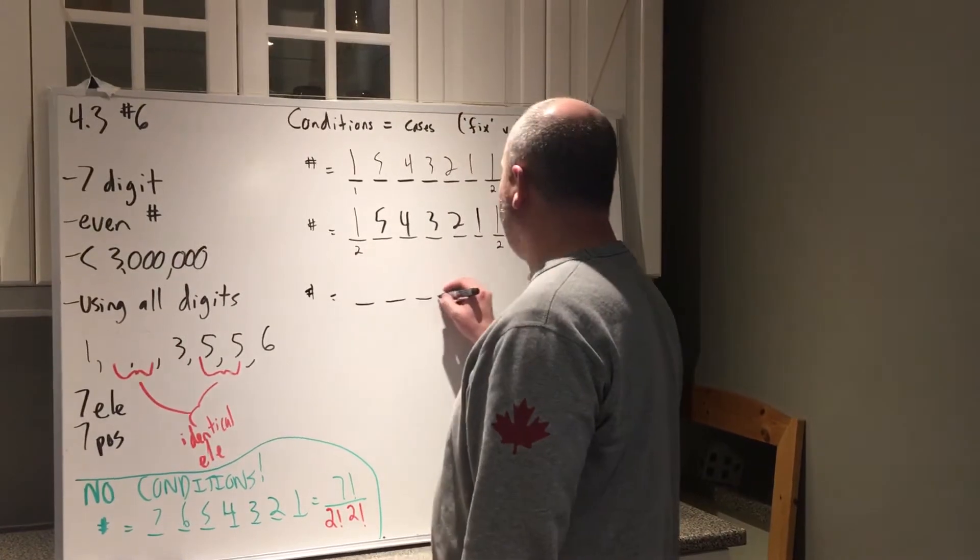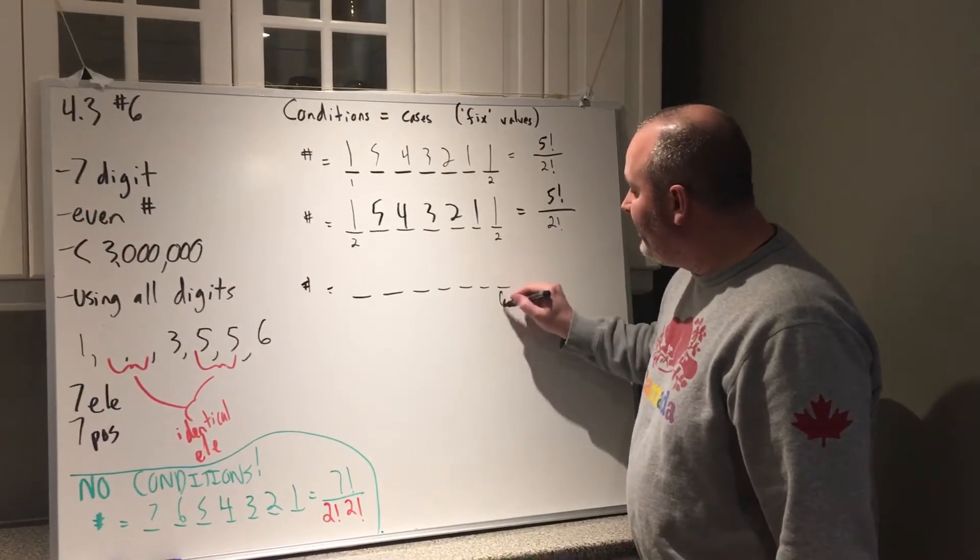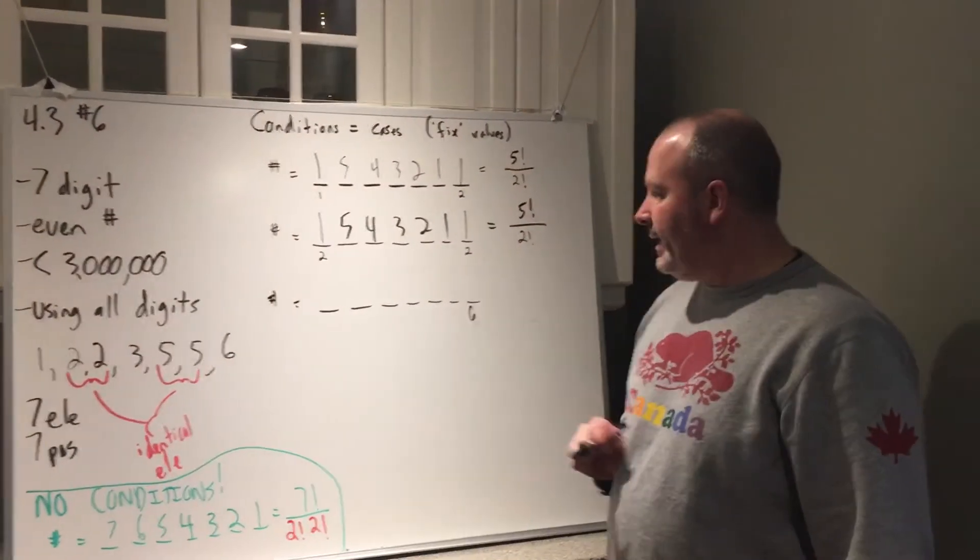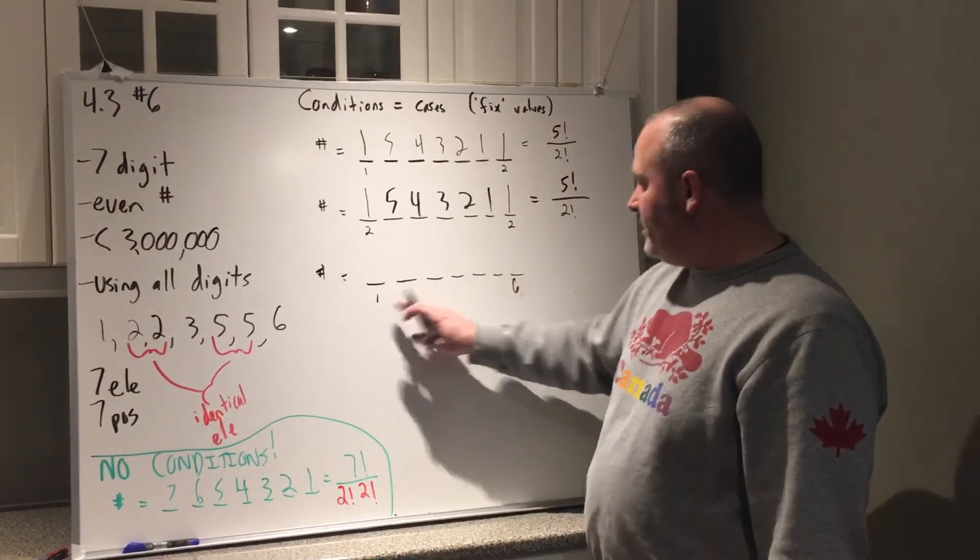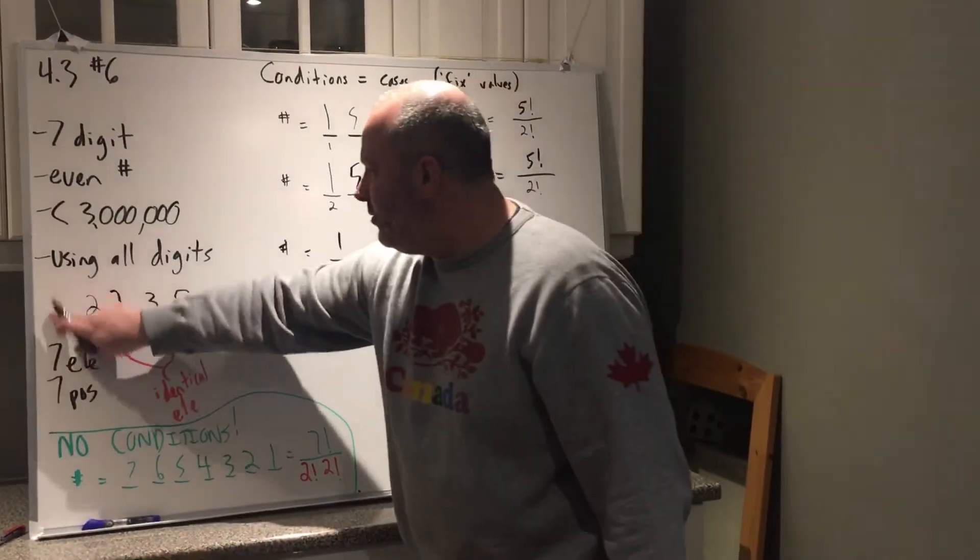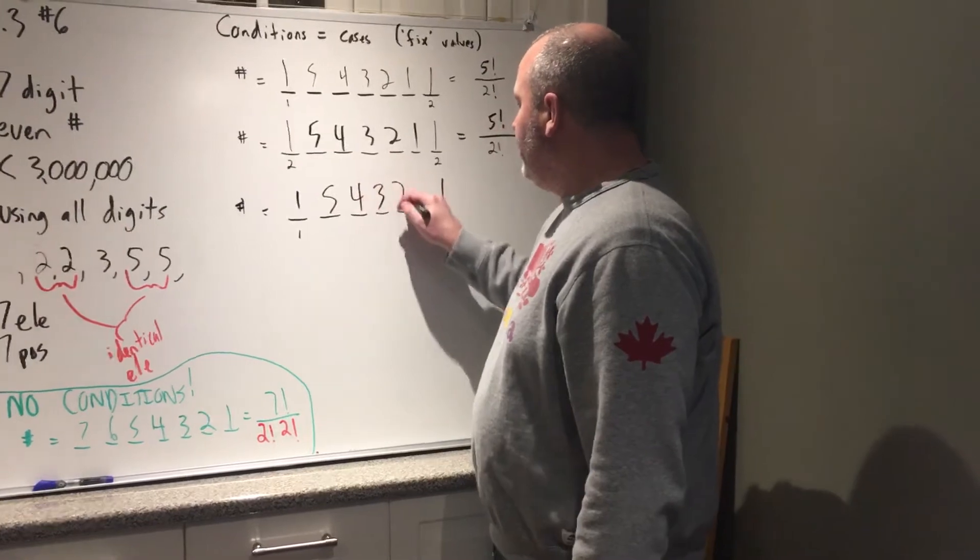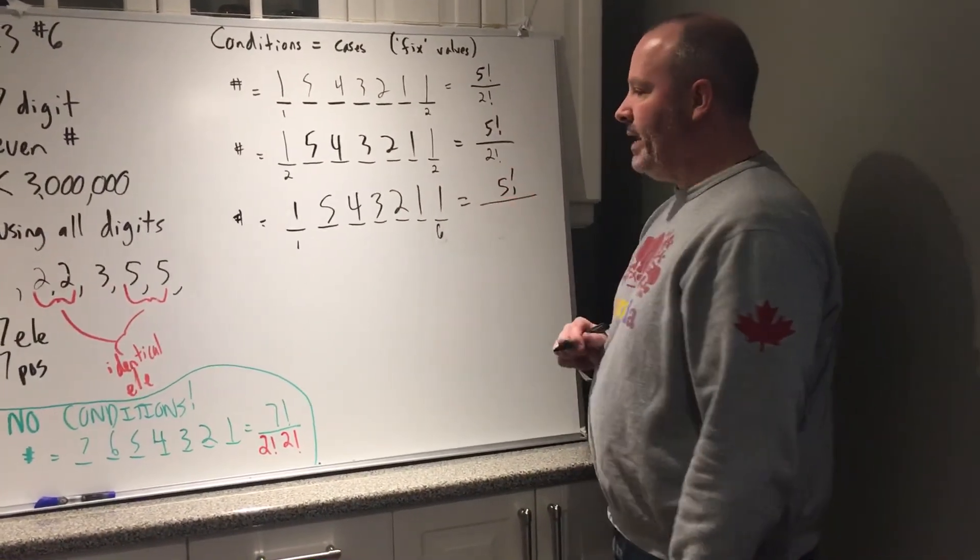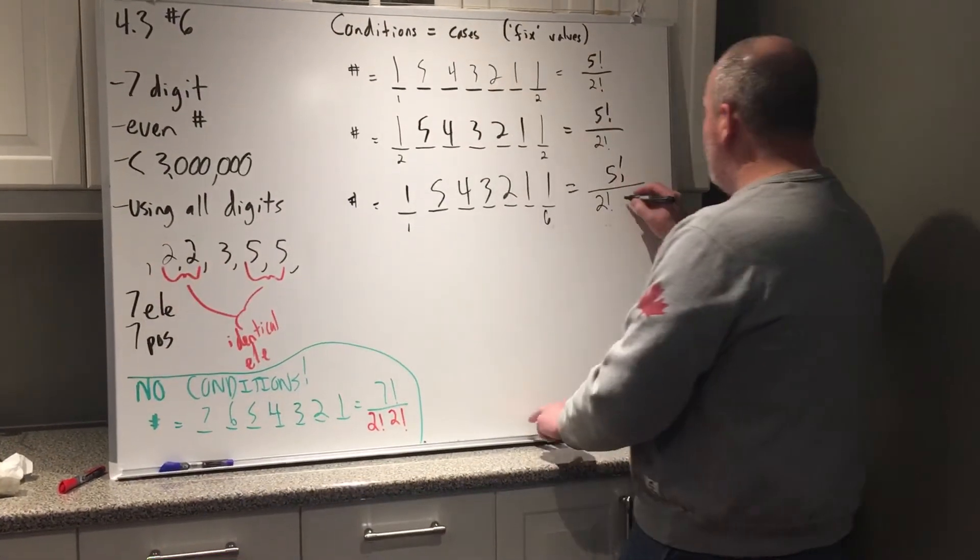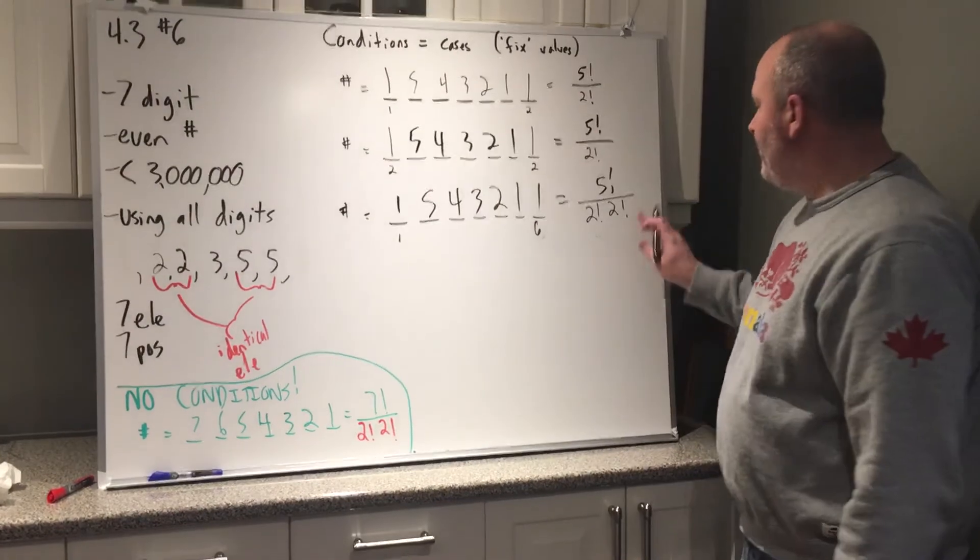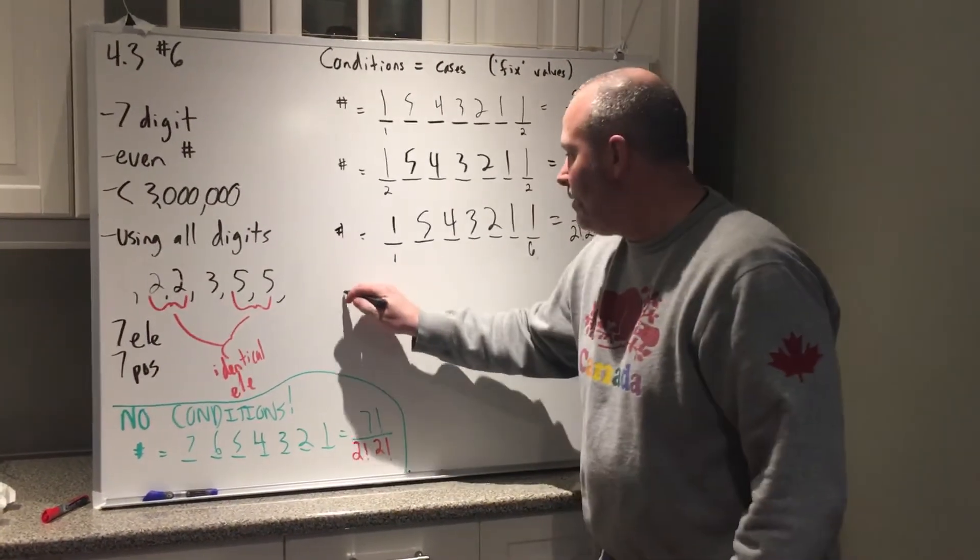Try another case. So instead of having a 2 at the back here, I have a 6, because remember, this number needs to be even. Put all my digits back again. Even, but less than 3 million. Less than 3 million means I can use a 1 in this spot. A 1 and a 6 is less than 3 million and even. Again, what I do is I remove this guy and I remove this guy. And I've got 2, 2, 3, 5, 5. So five elements, five positions. 5 factorial. Now I have two 2s and two 5s rolling around in here to create variable situations. So I lose 2 factorial for the two 2s and I lose 2 factorial for the two 5s.